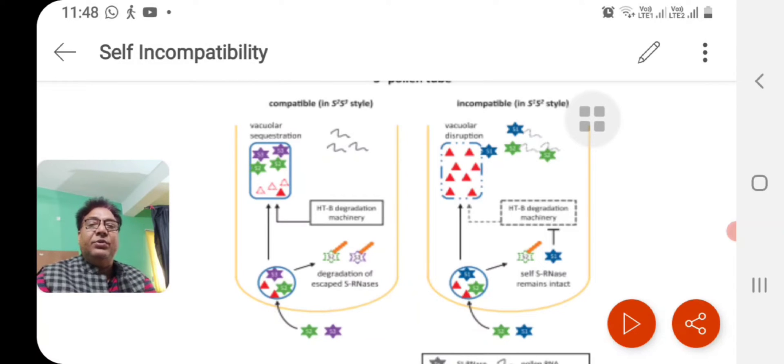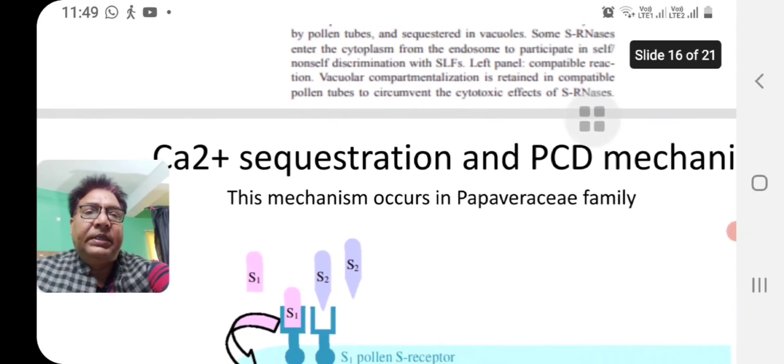Whereas in case of incompatible pollen, the endocytosed sRNAs and STB protein move into the vacuole and remain deposited there. But the cytosolic sRNAs, if it is not similar, will block the STB protein degradation machinery. By blocking it, it causes the breakage of the vacuolar membrane, thereby releasing the sRNAs into the cytosol and degradation of the rRNAs. Therefore, there is no pollen growth further. This is how compartmentalization theory works in these species.